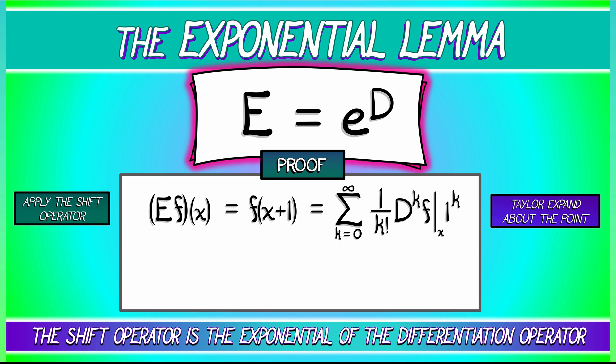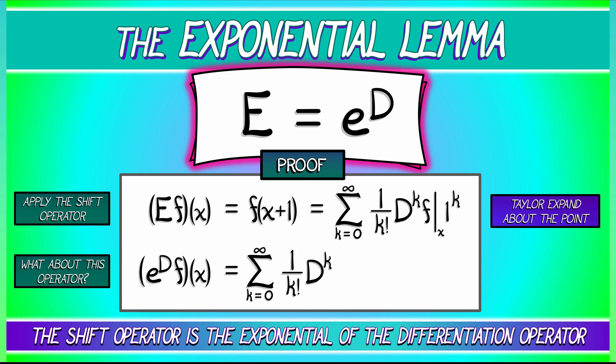That sum looks kind of familiar, doesn't it? What about the operator e to the D? What does that even mean? Well, when we apply it to a function f, evaluate it at x, we know what it means to exponentiate something. You take the sum as k goes from zero to infinity of one over k factorial times that thing to the k. In this case, it's the differentiation operator capital D. Now we take that sum and apply it to f. Because differentiation is linear, this works out so nicely. We evaluate this at x, and then that's it. We're done.